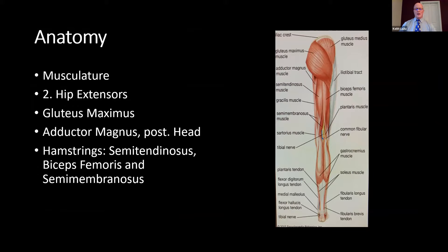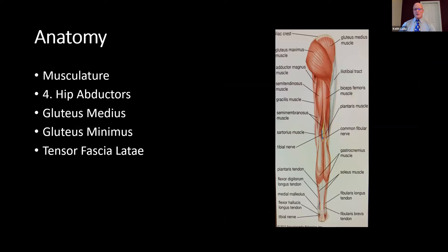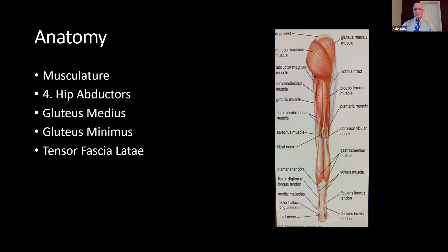The hamstrings include the semitendinosus, semimembranosus, and biceps femoris. For hip adductors, it includes the adductor magnus, pectineus muscle, and the gracilis. Hip abductors include the gluteus medius, gluteus minimus, and tensor fascia latae.